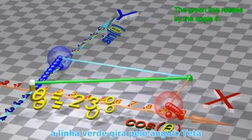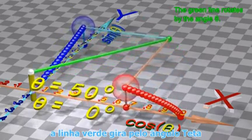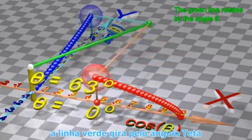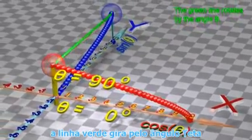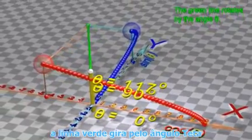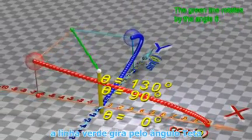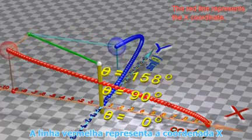The green line rotates by the angle theta. The red line represents the X coordinate, and the blue line represents the Y coordinate.